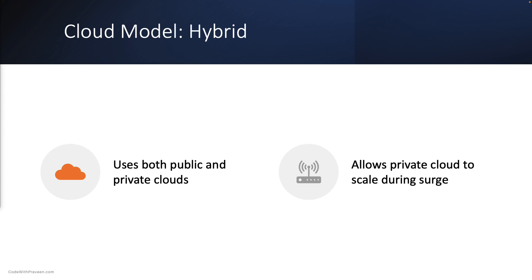The hybrid cloud model combines both public and private cloud infrastructure, allowing organizations to use their private cloud resources while leveraging public cloud resources during surge times. Hybrid clouds can offer more flexibility and enable organizations to tailor their infrastructure according to their needs.